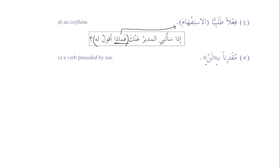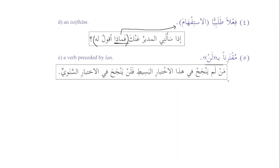Muqtarinan bi-lan: the jawab al-shart should be connected with lan. 'Man lam yanjah fi hadha al-ikhtibari al-basiti fa-lan yanjaha fil-ikhtibari al-sanawi' — whoever does not succeed in this easy exam will not succeed in the annual exam. We can see fa-lan is connected with fa, because whenever lan is the jawab al-shart, fa will be added.